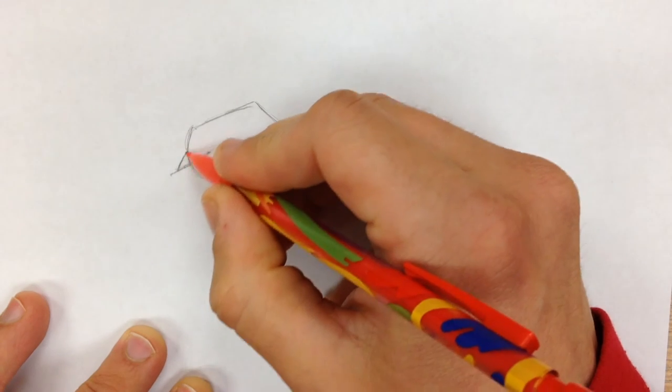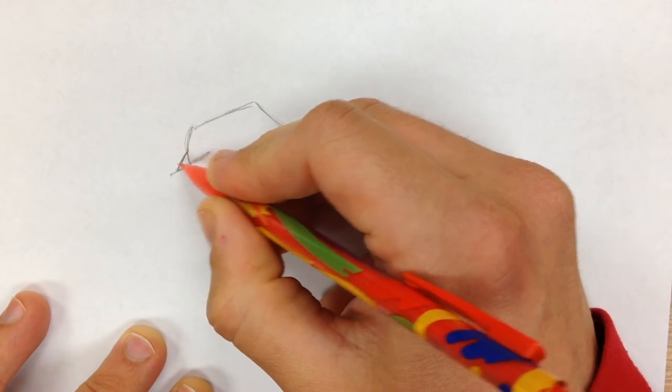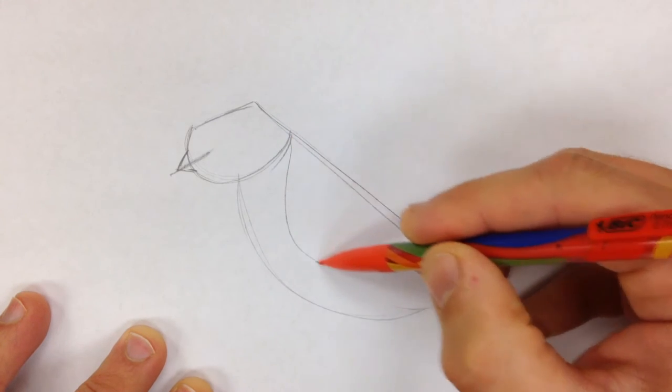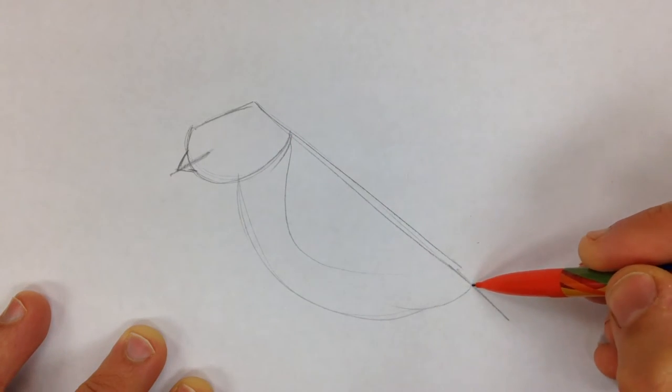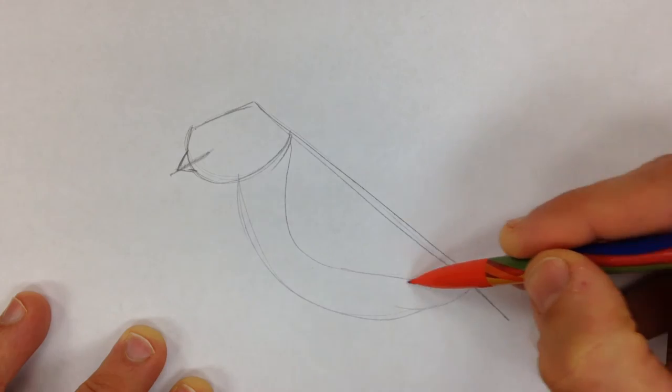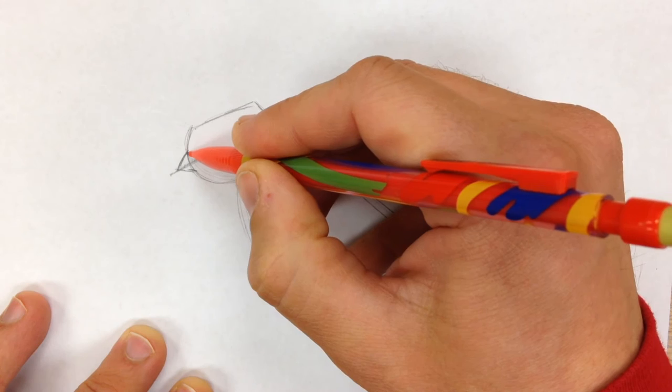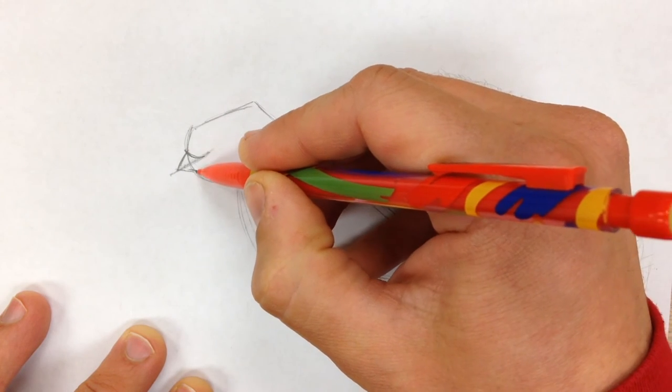I'm going to come in and add the front of the beak, and then I'm going to bring the wing down like this. It's going to be right here at that intersection. Next we'll add the rest of the beak. This actually kind of curves a little bit.